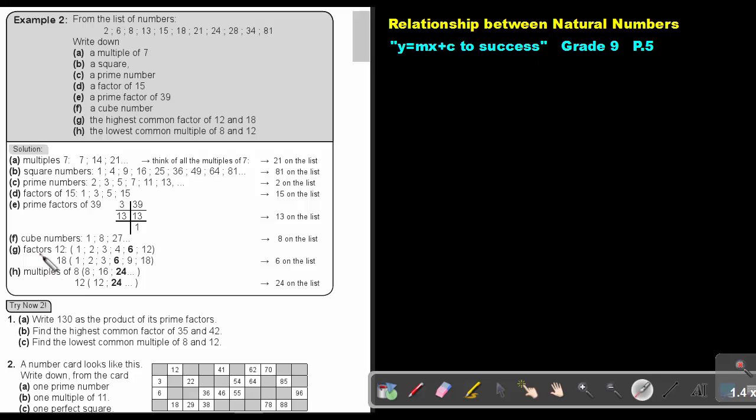Let's look at an example. From the list of numbers, write down a multiple of 7.